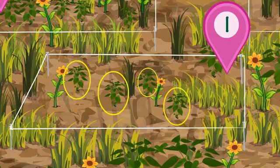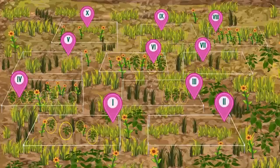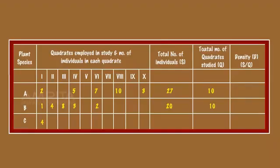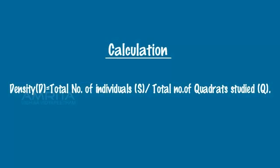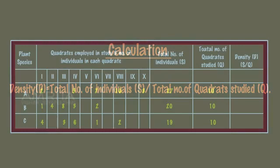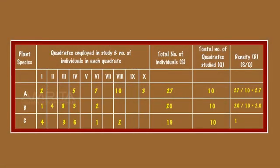Repeat the same procedure for species C and record the data in the table. We can calculate the density of plant population by this equation: Density is equal to total number of individuals of the species in all the sampling units divided by total number of sampling units studied. The density value thus obtained is then expressed as number of individuals per unit area.